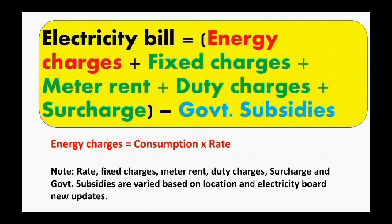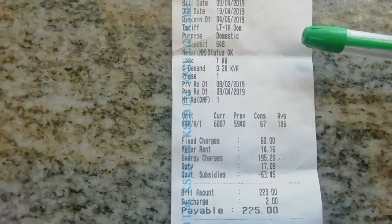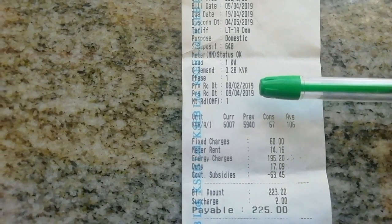Electricity unit rates are available on www.kcb.in website. The formula for calculating electricity bill: electricity bill equals energy charges plus fixed charges plus meter rent plus duty charges plus surcharges minus government subsidies. For calculating energy charges, multiply energy consumption by the rate of energy.